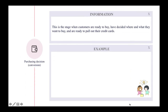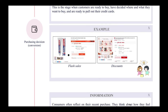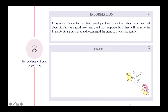The fourth stage is purchasing decision or conversion. This is when customers have decided where and what they want to buy and are ready to pay. Online marketing communication can provide customers with online promotions, customer email discounts, and flash sales. For example, the toothpaste brand White White offers flash sales, and the brand Flower Notes offers discounts on makeup items.